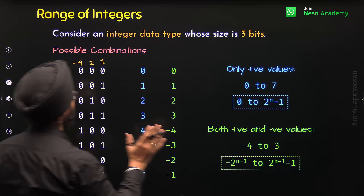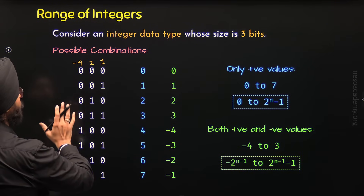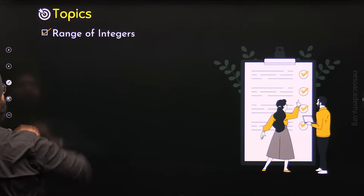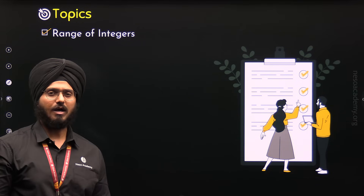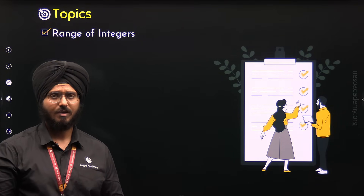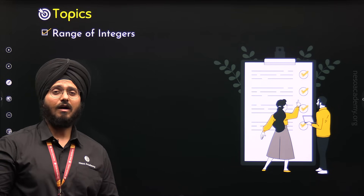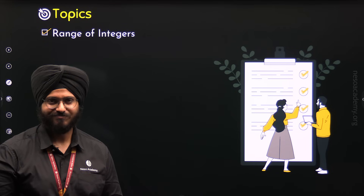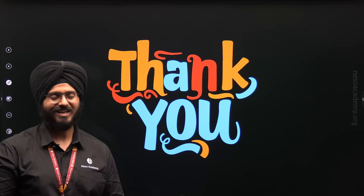So we have understood how to derive the formula to calculate the range of integers, and we are done with this topic. We learned how to derive the formula to calculate the range of integers. In the next lecture, we will understand fundamental data types in C++. Thank you so much for watching this lecture — I will see you in the next one.